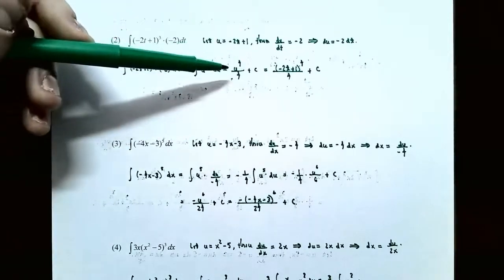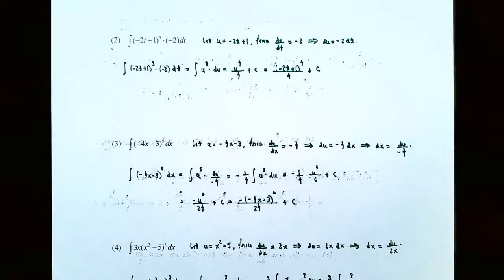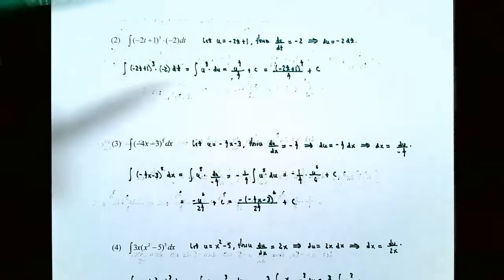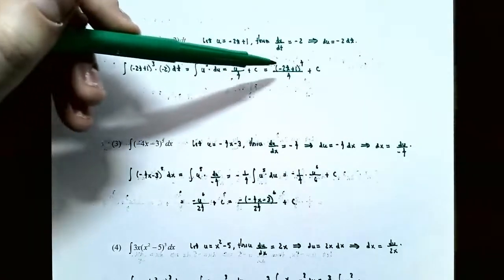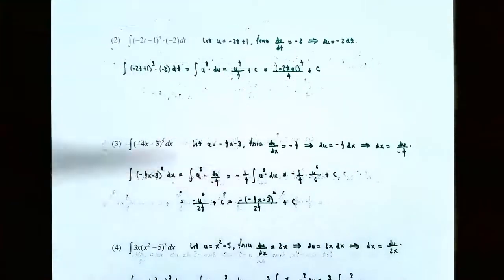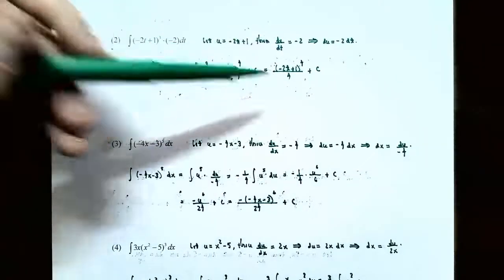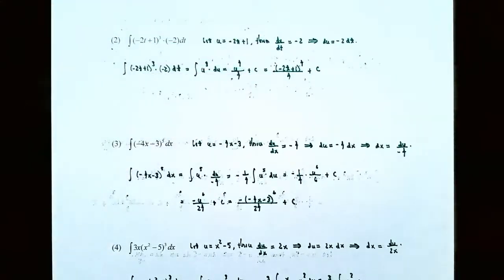The last step with the substitution method is always to go back and replace u with what the inside function was called. u was negative 2t plus 1, so replace u with negative 2t plus 1 — you get negative 2t plus 1 in parentheses raised to the fourth power, all divided by 4 plus c. That's the family of antiderivatives for this original integrand.